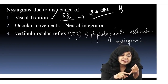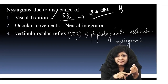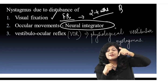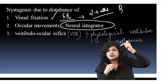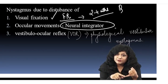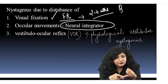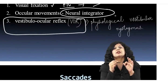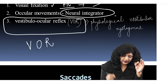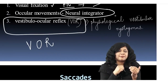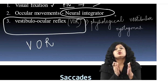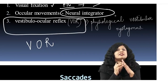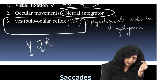If there is a disturbance at that time and the fixation reflex is not properly developed, nystagmus results. The second component is the neural integrator, which integrates neural connections with ocular movements. Third is the vestibulo-ocular reflex. If nystagmus occurs due to disturbance of the vestibulo-ocular reflex, that is called physiological nystagmus.